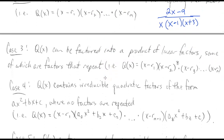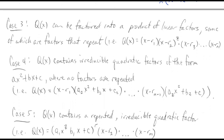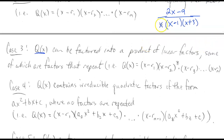For case three, we again have a rational function, but now the denominator has a product of linear factors where some of them repeat. Instead of just x(x−1)(x+3), maybe we have something like x(x−1)(x+3)², where the (x+3) factor repeats — that's what a case three situation looks like.